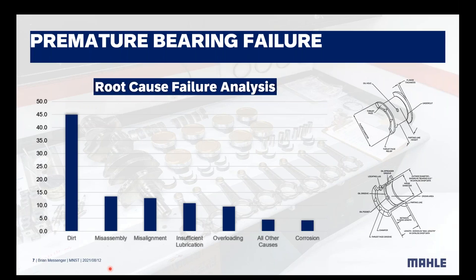Next is misassembly — there are some different assembly errors, such as oil clearance errors. Then misalignment, insufficient lubrication, overloading, and corrosion. As you can see, corrosion is not that common. A lot of times corrosion is secondary — there may have been some contamination in the oil that created corrosion, or sometimes it's just plain neglect.